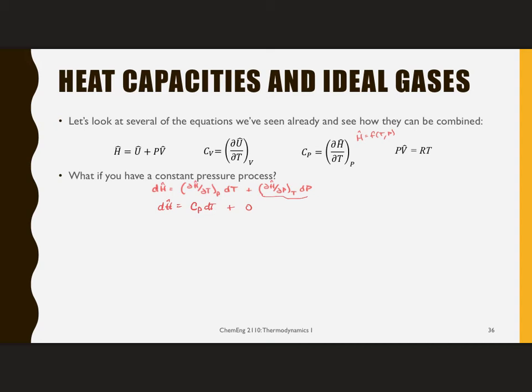Now there's another way of looking at this. And that is to say H is U plus PV. Since we've said that it's an ideal gas, then PV is equal to RT. And I need to put a little circumflex on these. And now then take the differential, DH is equal to DU plus the differential of RT. Well, R is just a constant, R DT.